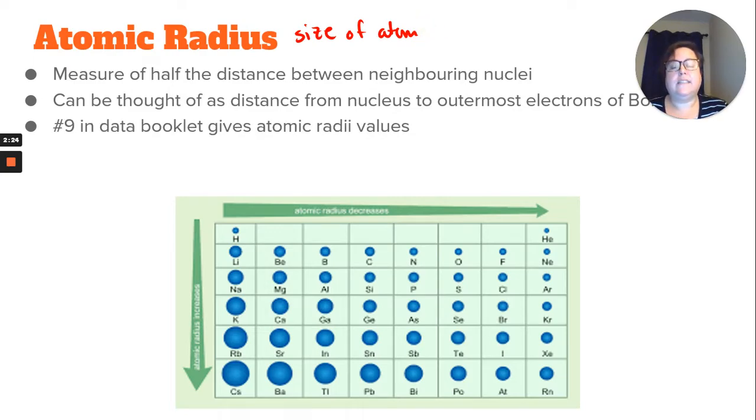The values are actually given to you in the data booklet in section 9. We don't really tend to use those values, but they are there, and so you might see a question that's referring to them.